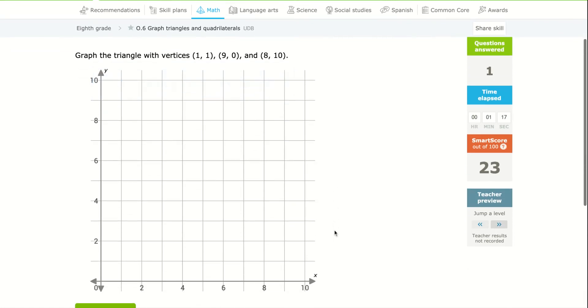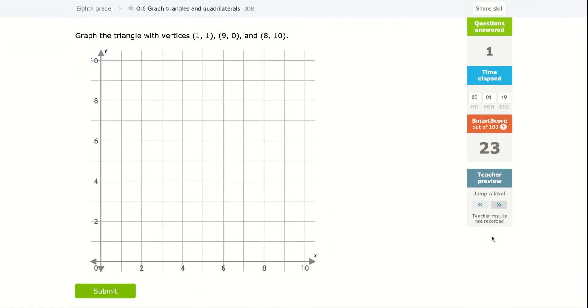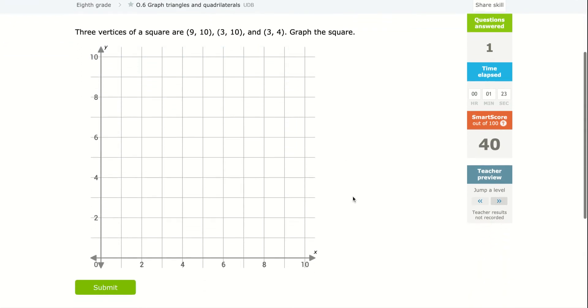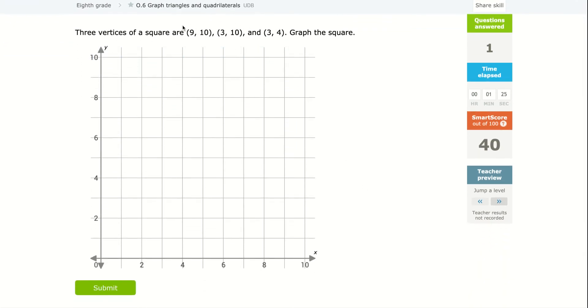You will get to quadrilaterals and other different shapes. And sometimes they don't give you all the vertices. And what I mean by that, first of all, vertices are the corners. So when it says the three vertices and graph the square, we're going to go out to nine all the way up to 10. So again, I went right nine up 10.